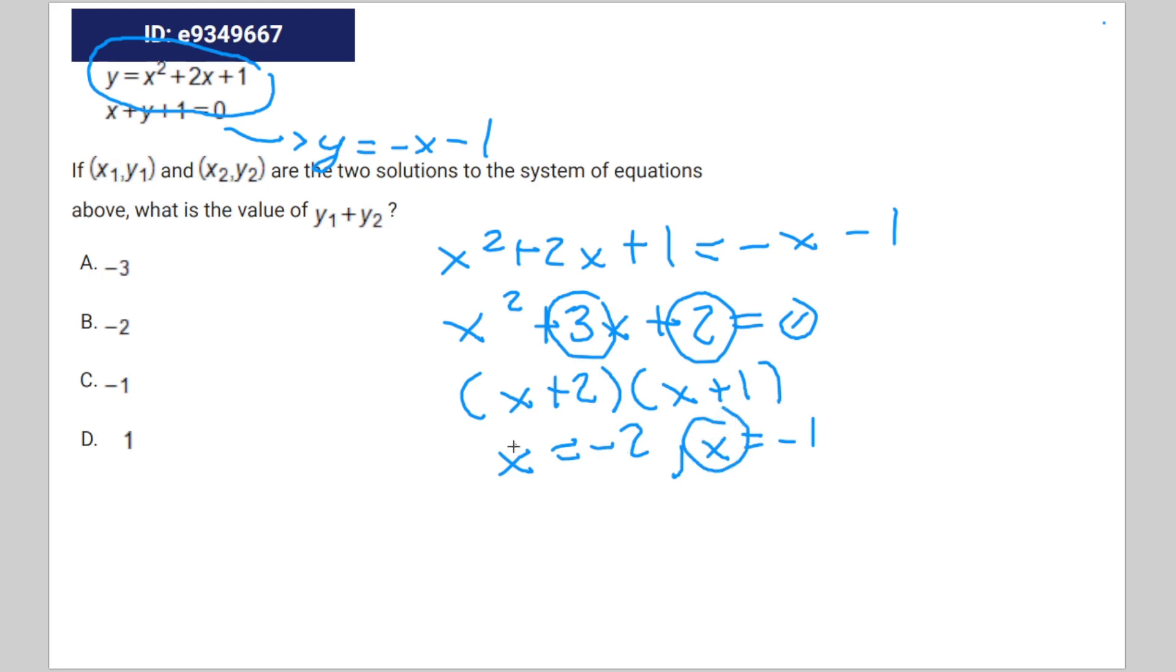But those are x values. We're looking for y values, so we're going to plug this into the original y equation. For the first one, negative 1, that's going to be y = -(-1) - 1, which equals 0. And then for the second one, negative 2, that's going to be y = -(-2) minus 1.